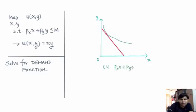The second condition is that at this point the slope of the IC is equal to slope of the budget line. What is the slope of the IC? Well, slope of the IC is marginal utility of x divided by marginal utility of y.